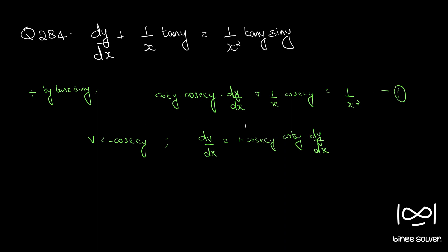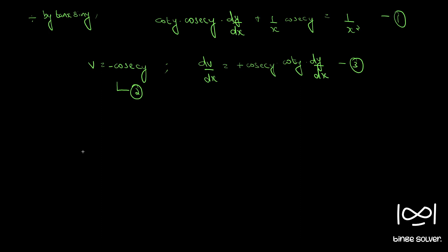Let's call this equation 1 and this 2 and this 3. Now using 3, using 2 and 3 in 1 we have cot y cosec y dy/dx is dv/dx.